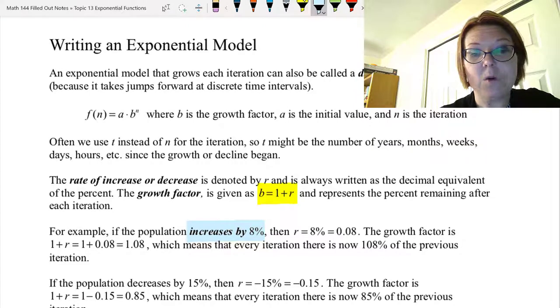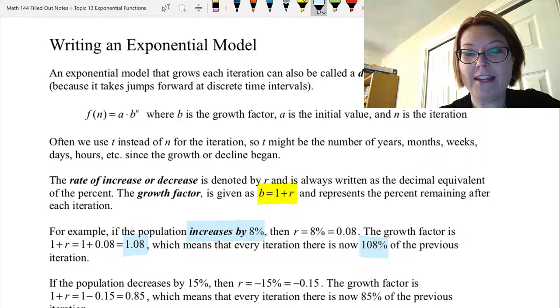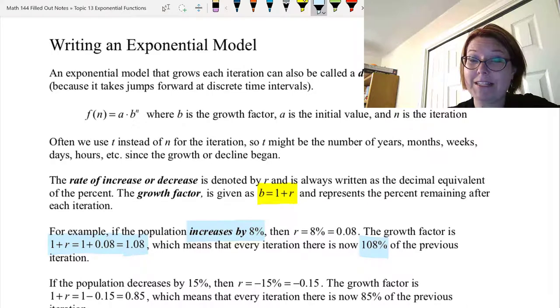The growth factor is what remains after each iteration. So if we're growing by 8%, then what remains after each iteration is 108%, or 1.08. We can get that by doing 1 plus r, which is 1 plus 0.08.